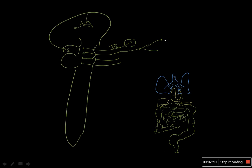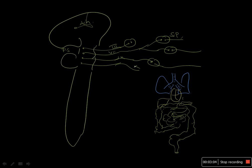From the seventh cranial nerve, we have two ganglia: the sphenopalatine (or pterygopalatine) ganglion and the submandibular ganglion. From the ninth cranial nerve, we have the otic ganglion. The vagus nerve also contributes. These are the four main cranial nerves contributing to the parasympathetic system. Additionally, there is parasympathetic outflow from the sacral side.